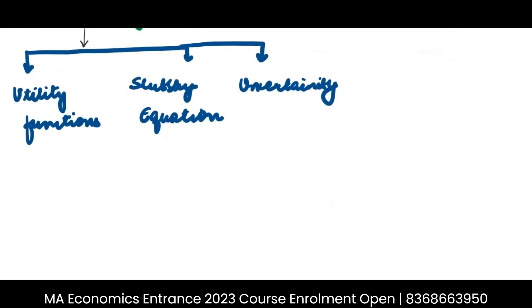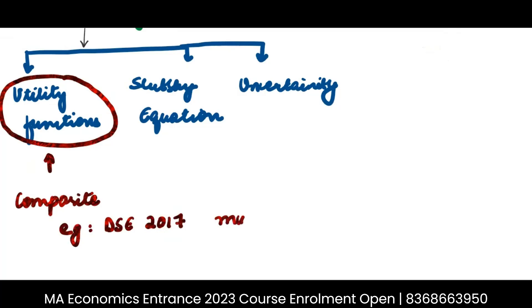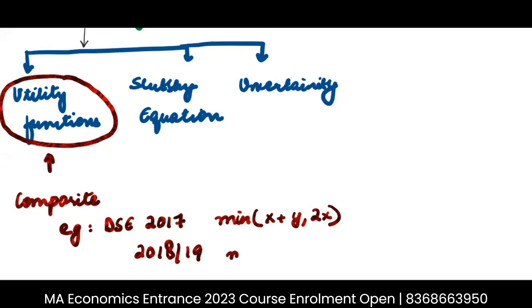Now, when it comes to utility functions, you will have to do different composite utility functions also. For example, if you look at DSE 2017 paper, you will see functions like this. They will ask you min of x plus y comma 2x. If you look at DSE 2018-2019 paper, you will again see some composite function. Functions like this, min of x plus y comma plus maybe something like this. Min of x comma y plus max of x comma y, something like this, right?